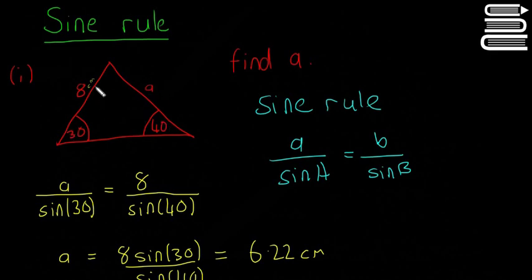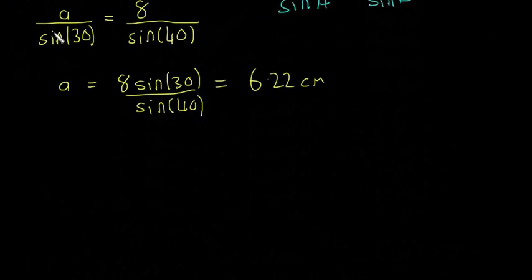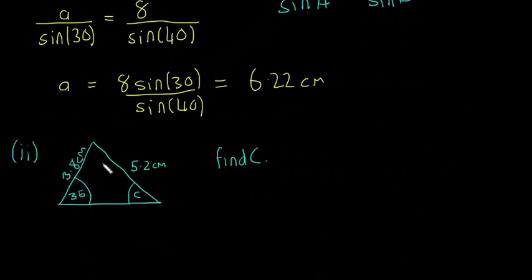So that's how to use the sine rule if you're looking for a side. You're going to need the other two angles, and you'll need one of the sides. That's if you want to find a second side on a triangle. Then the next example we're going to look at.